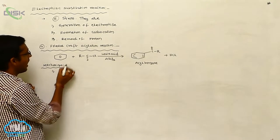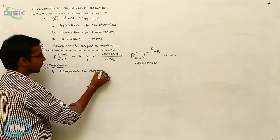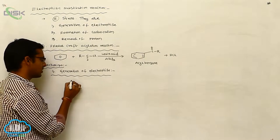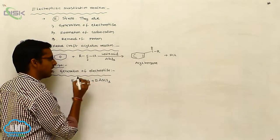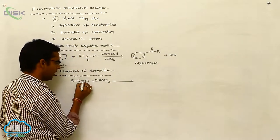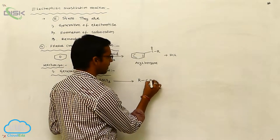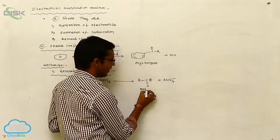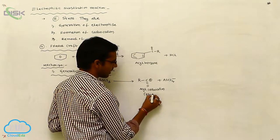The first step is generation of the electrophile. In acid chloride, the C–Cl bond undergoes electrolytic cleavage, giving a carbocation. The acyl cation (R-C=O⁺) is formed along with AlCl4⁻. This acyl carbocation acts as the electrophile.